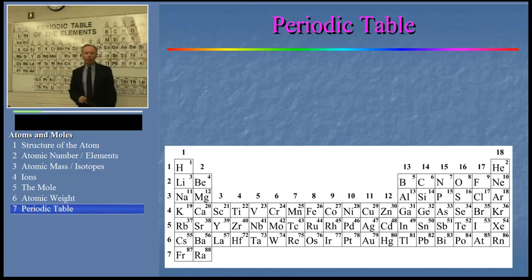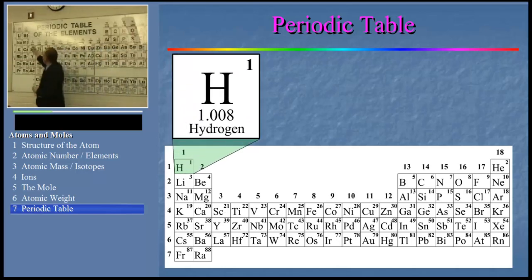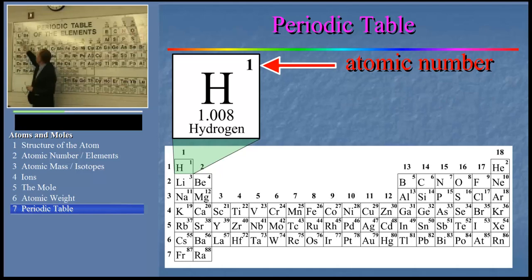Let's look at a particular entry in the list. Take, for example, hydrogen up here. You'll see that along with the chemical symbol of hydrogen, H, we also have the atomic number of hydrogen, 1, and below the atomic weight of hydrogen.